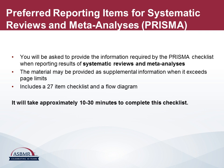The final set of guidelines we use are the PRISMA guidelines — Preferred Reporting Items for Systematic Reviews and Meta-Analyses. This material can be provided as supplemental information if it exceeds the page limits for the article. It contains a 27-item checklist and also a flow diagram. The time taken to complete the checklist would again be in the order of 10 to 30 minutes.